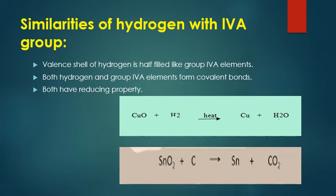The second similarity: both hydrogen and Group 4A elements form covalent bonds. Hydrogen can form both covalent and ionic bonds, and when forming covalent bonds it resembles Group 4A elements — which are P-block, non-metal elements that form covalent bonds. The third similarity: both have reducing property.